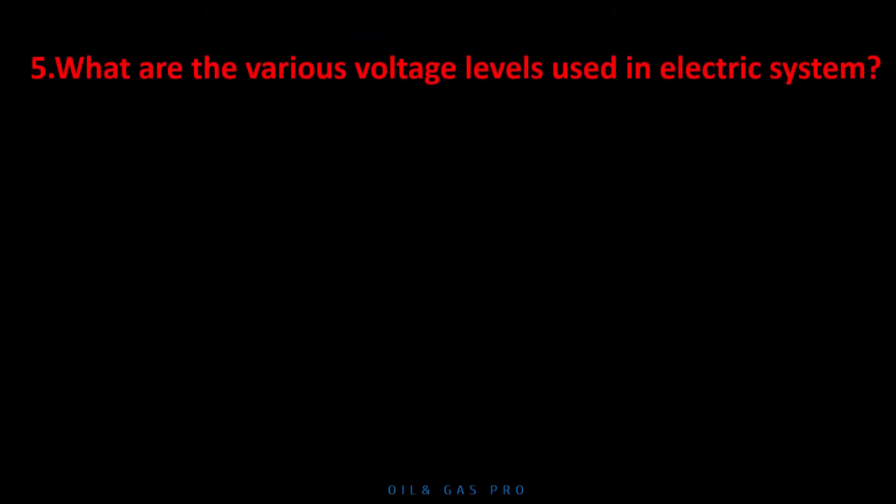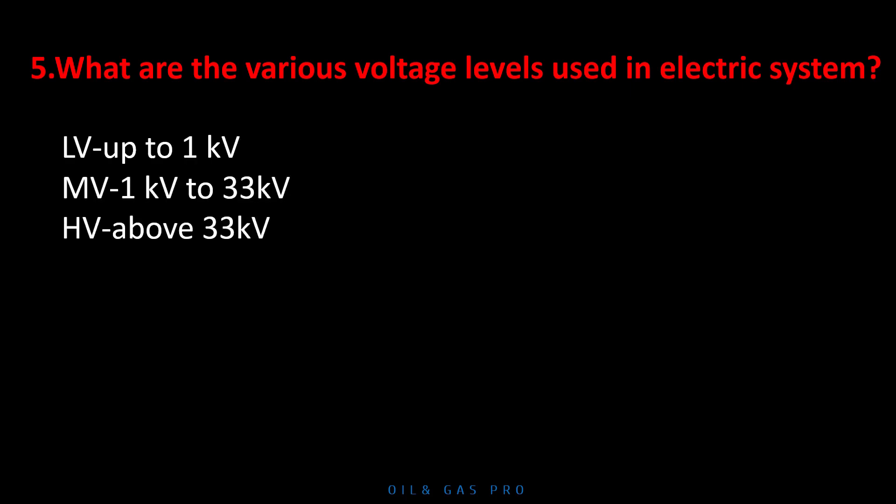What are the various voltage levels used in an electric system? LV: up to 1 KV. MV: 1 KV to 33 KV. HV: above 33 KV.